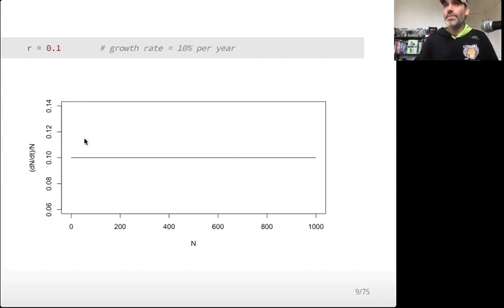If we graph this, it's pretty simple. Per capita growth rate dN/dt over N as a function of N is just a flat line.